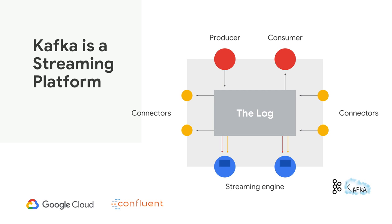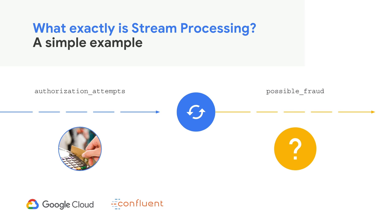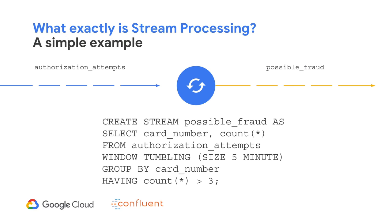To show what stream processing could look like, imagine being a credit card processor. You get thousands of authorization attempts per second. A tiny percentage could be incredibly suspicious, so we need to detect those suspicious events, separate them from the good ones, and have someone investigate them. If someone is repeatedly authorizing the same card over and over, it's probably very suspicious. We want to filter this stream continuously — not just once a day, because by then the bad guys may be already gone.